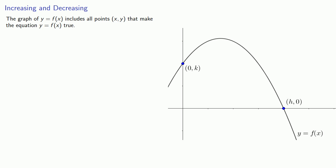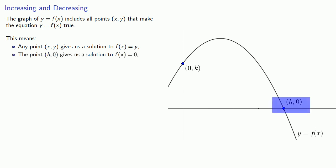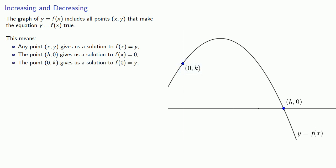Remember, the graph of y equals f of x includes all points (x, y) that make the equation y equals f of x true. This means several things. First, any point (x, y) gives us a solution to f of x equals y. Points like (h, 0) are points on the x-axis and give us a solution to f of x equals 0. The point (0, k), the y-intercept, gives us a solution to f of 0 equals y. We can also use the graph to determine where f of x is increasing or decreasing.